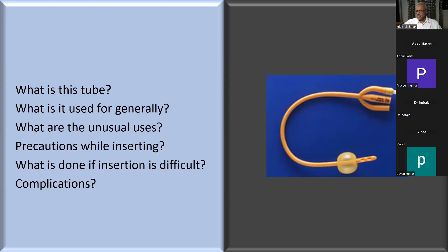There are certain situations where you do not catheterize at all. In case of trauma and suspected urethral rupture - what makes you suspect a urethral rupture? Blood at the meatus and a perineal swelling or perineal hematoma.